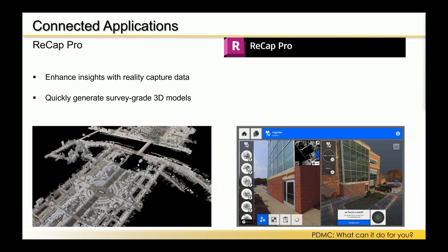Recap Pro is a really cool software that lets you create high-quality digital models of real-world assets using laser scan technology or even pictures. If you have a camera or a GoPro on a drone doing a site survey, you can load all those pictures into the software and it'll create point clouds, which you can then use to create highly realistic models. You can do laser scans of internal or external spaces and generate survey-grade 3D models — fantastic if your designs need to attach to or coexist with something already in the real world.